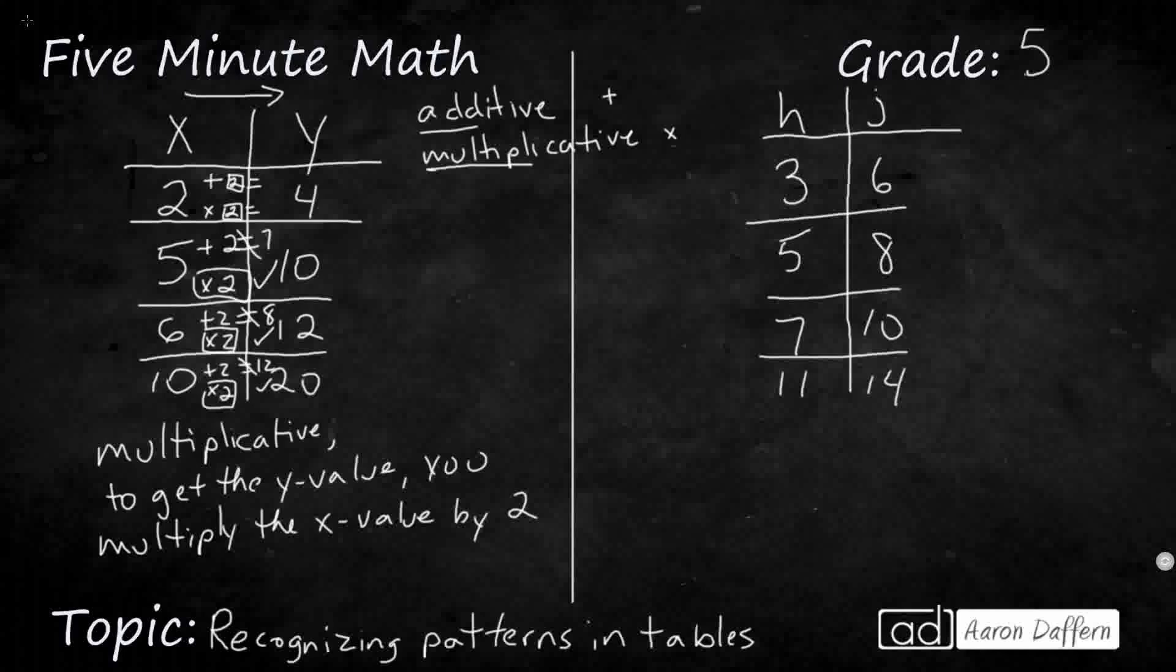And much like the first row on the other side, right, I could add 3. That would work. Or I can multiply by 2. So I have an option for adding and an option for multiplying. Sometimes when you do this on the first row, it's only going to be one or the other.